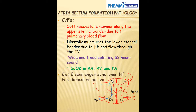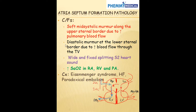Because of increased volume of blood getting to the right atrium, that leads to increased blood flowing through the tricuspid valve. The tricuspid valve opens during diastole, and that can cause a diastolic murmur at the lower sternal border due to increased blood flow through the tricuspid valve. Additionally, there is increased blood flow through the pulmonary artery, which can also cause a soft midsystolic murmur along the upper sternal border due to increased pulmonary blood flow — the pulmonary valve opens during systole.